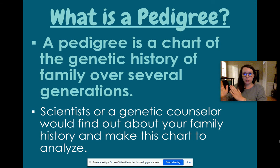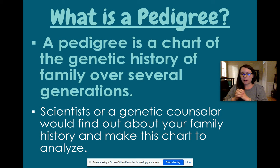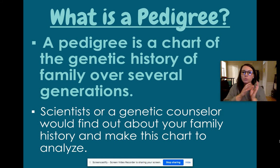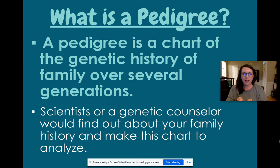Each different pedigree shows you a different specific trait. So if you were going to track something like eye color, you would specifically track that brown eye trait going down through the pedigree. If you were going to track a different trait, you would need a different pedigree. We're going to use our knowledge from Punnett squares to help us, because they both look at probabilities of passing on those traits to the offspring.